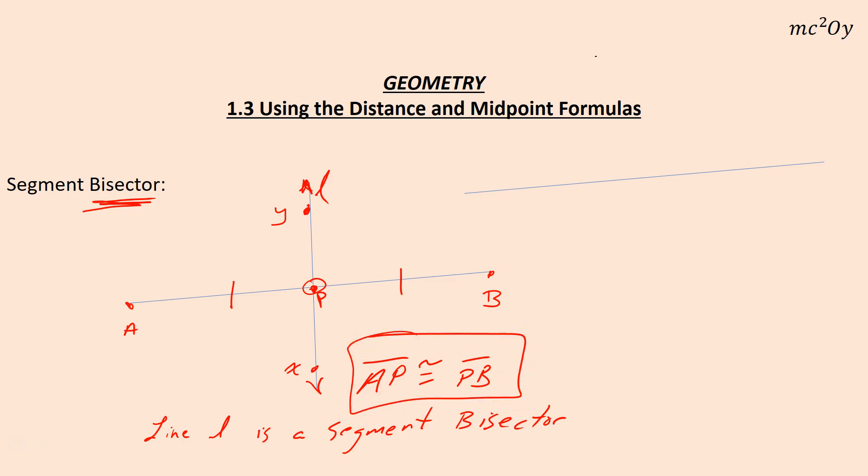Alright, so that's a segment bisector. Now, we call this the midpoint. A segment bisector, anything can bisect a segment. So let's once again say we have AB. And we'll call this point M. A point could bisect a segment.